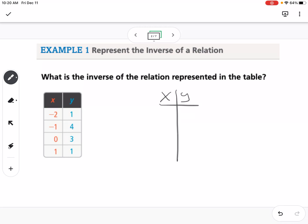So my x's were negative 2, negative 1, 0, 1 - those become my y's. And then my y's become my x's.